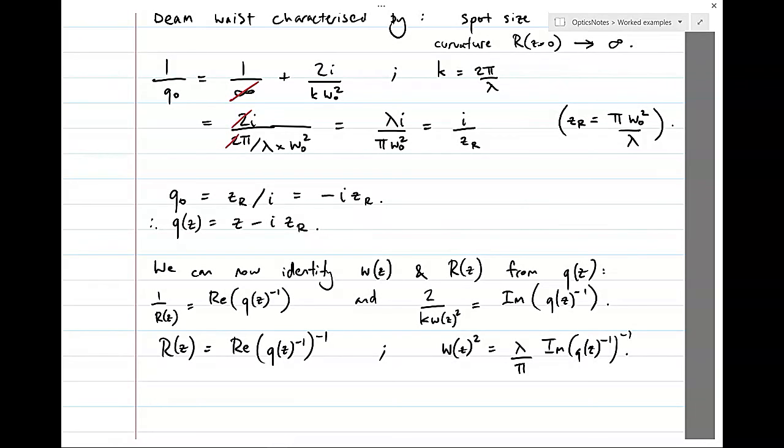Well, we know how to do things like take the real part of Z. Sorry, take the real part of Q. That bit's easy. It's Z. We know how to take the imaginary part of Q. That's also really easy. It's negative ZR. And we also know how to take the modulus of Q.